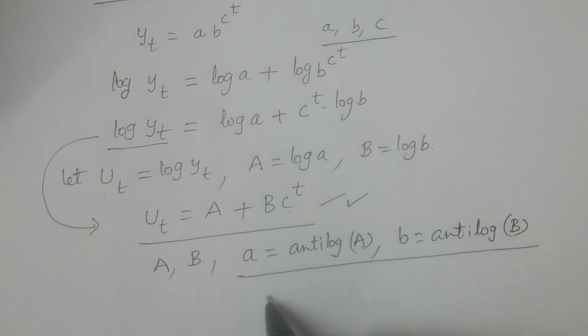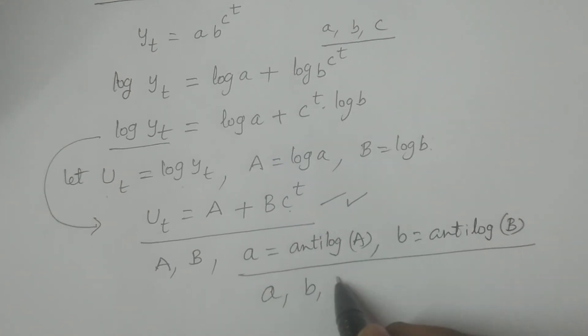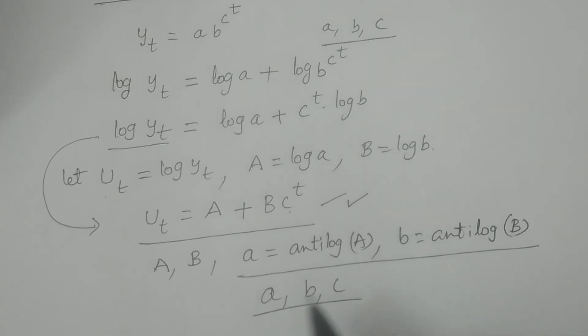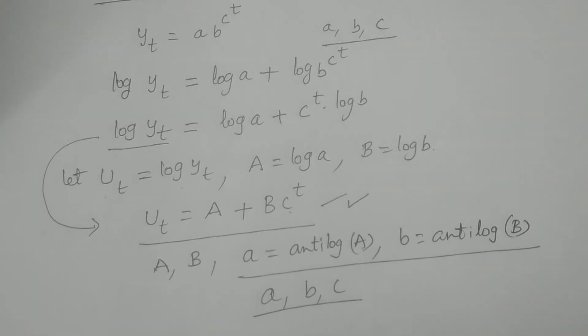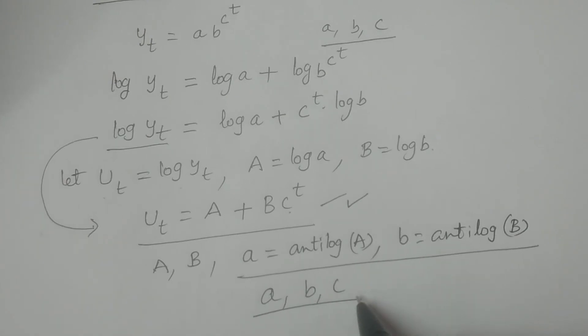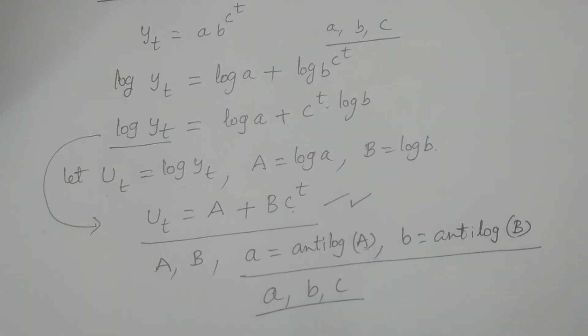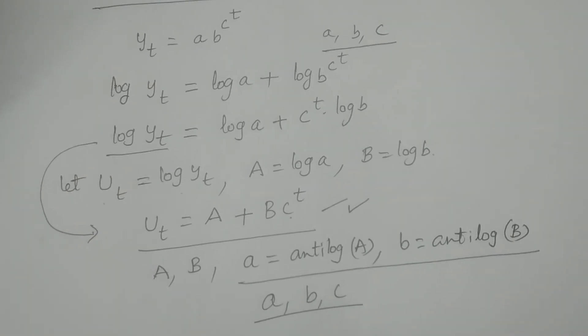So therefore, by using these values a, b and c, the given Gompertz curve is the best fit for the given data. Whatever the obtained Gompertz curve by these values a, b and c, the parameters, the Gompertz curve is the best fit for the given data.